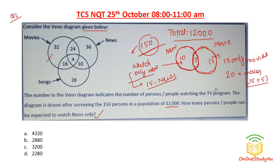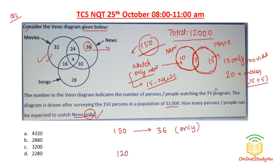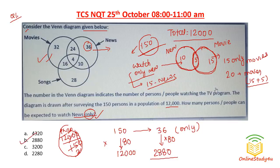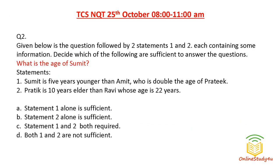So out of 150 surveyed, there are 36 persons watching news only. The total population is 12,000. Now 12,000 divided by 150 equals 80 times. So 36 multiplied by 80: eight times 36 is 288, giving 2,880. So 2,880 persons are expected to watch news only.